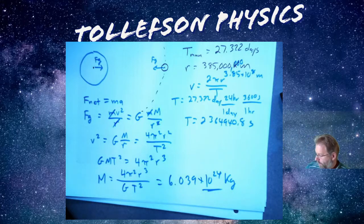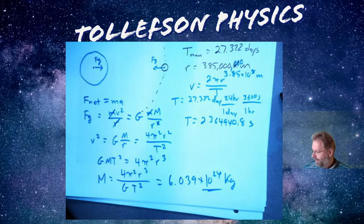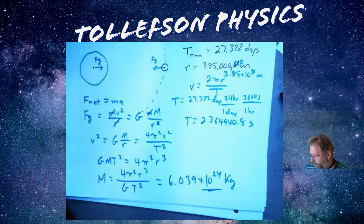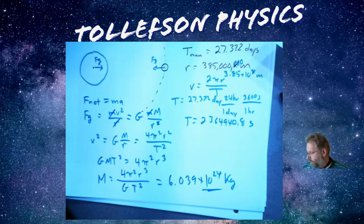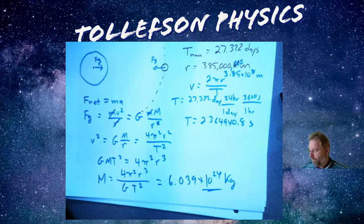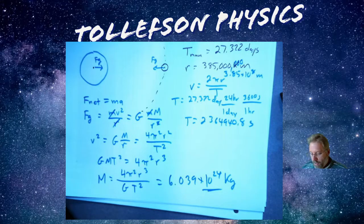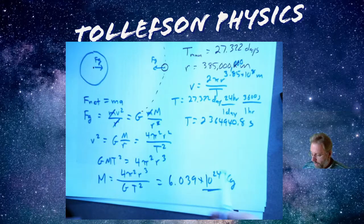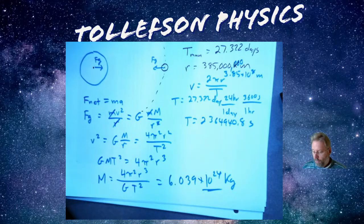So 10 to the 24 is on the right scale and then if we look at my handy dandy cheat sheet of celestial bodies, what the measured accepted value is 5.972 times 10 to the 24th, which actually is not terribly far off from a calculation standpoint. So there you go, you can get pretty close within reasonable error.